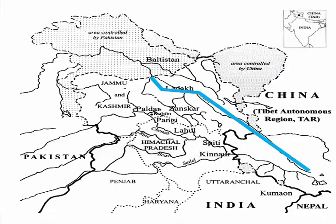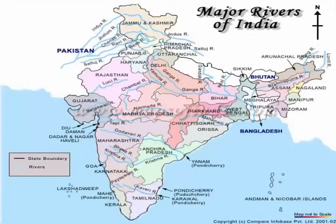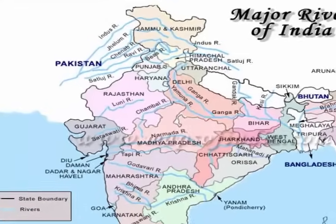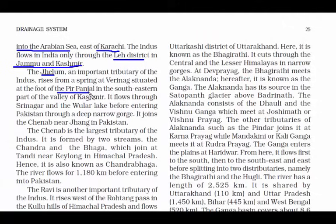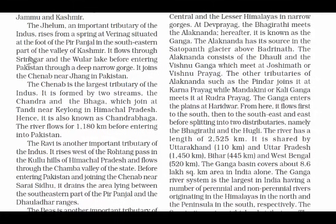The Indus flows in India only through the Leh district of Jammu and Kashmir. Jhelum, one tributary of Indus, rises at the foot of Pir Panjal in the southeastern part of the Kashmir Valley, enters Pakistan through Srinagar and the Wular Lake, and joins the river Chenab near Jhang in Pakistan.